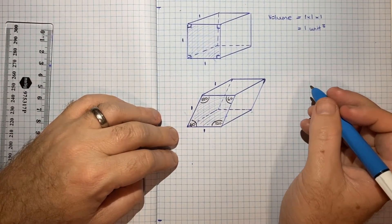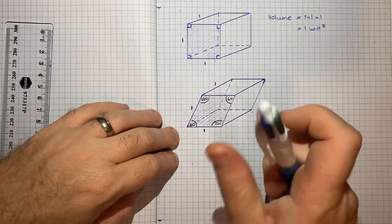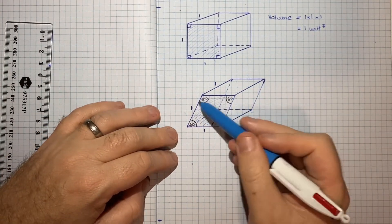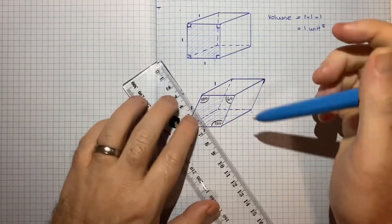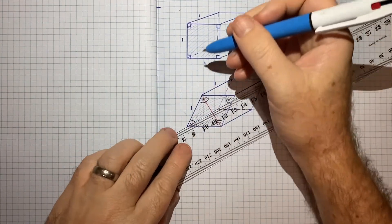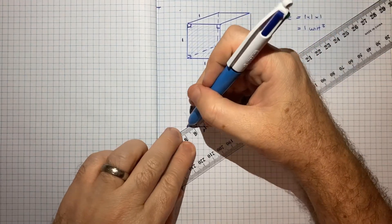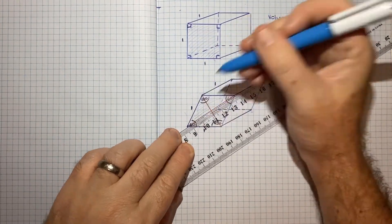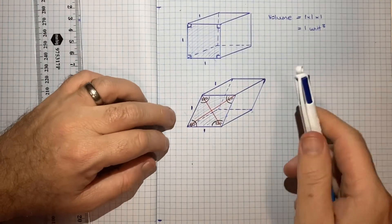And now what I can do is I know that the area of this face will be the two diagonals multiplied together, and then divide it by 2.